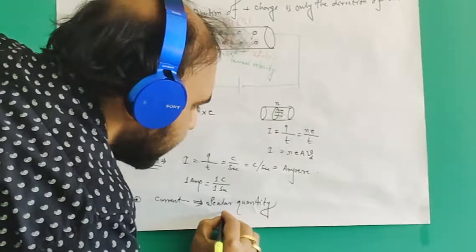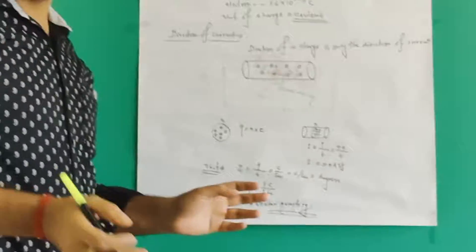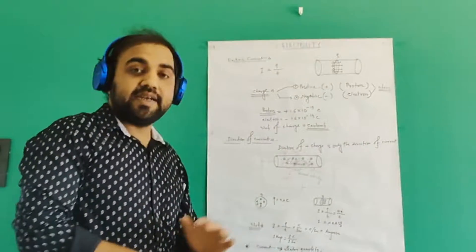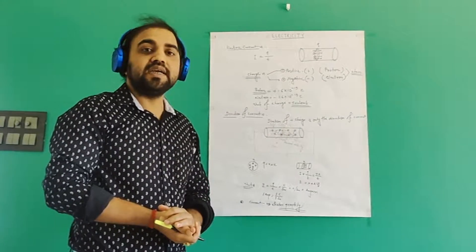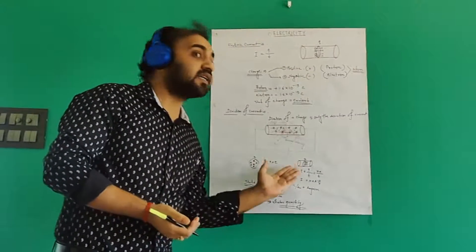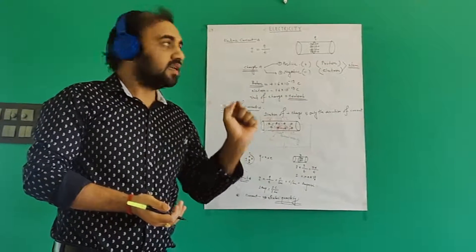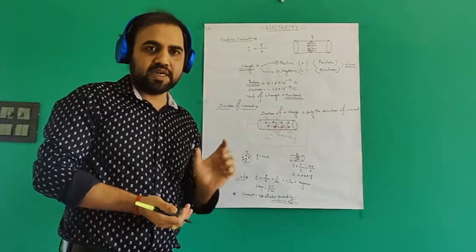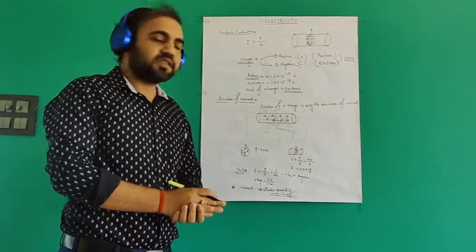This much about electric current. In next class we will proceed with the reason why this current is flowing. We will discuss electric potential and potential difference in the next section. Thanks to all.